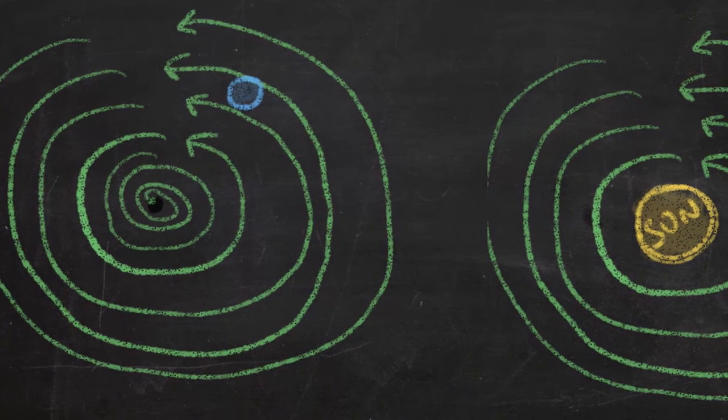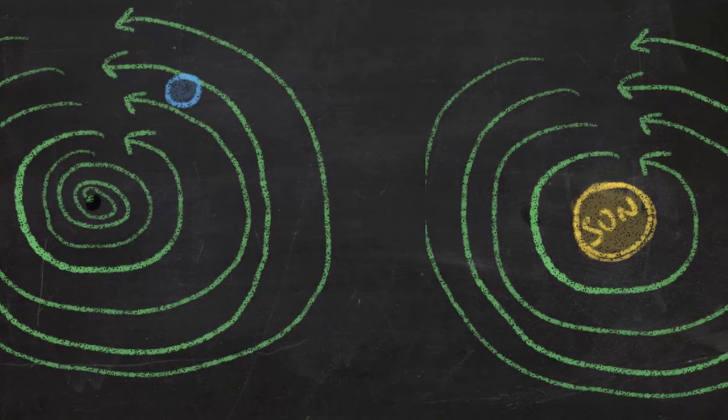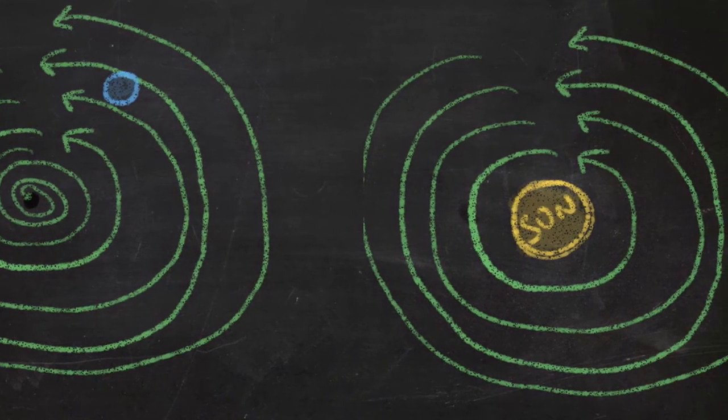So since far away, the gravity of a black hole is identical to that of a thing, black holes behave just like regular things when you look at them or orbit them from far away. But they are not regular things at all.